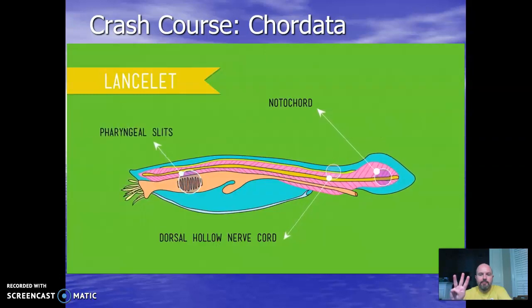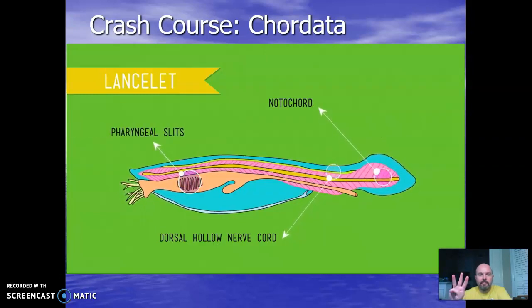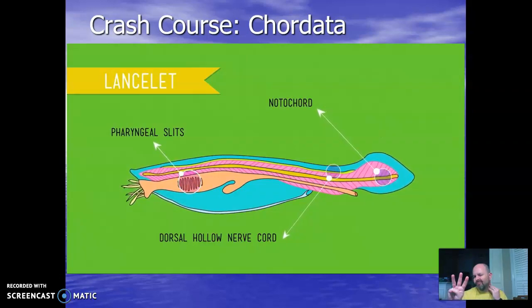Third, all chordates have pharyngeal slits. In invertebrates like the lancelets, they function as filters for feeding. In fish and other aquatic animals, they're gill slits. And in land-dwelling vertebrates like us, they disappear as a fetal form, but that tissue develops into areas around our jaws, ears, and other structures in the head and neck.